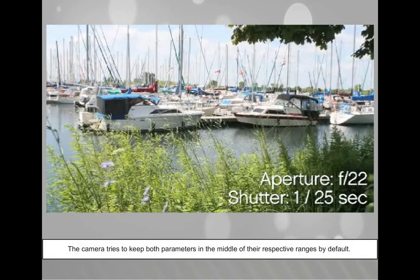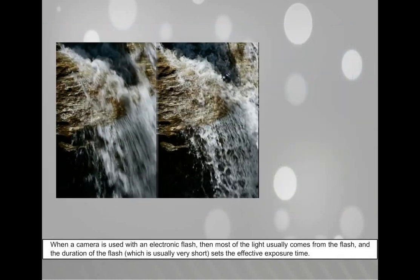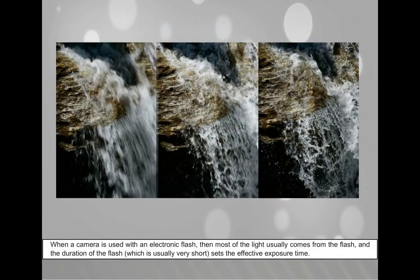The camera tries to keep both parameters in the middle of their respective ranges by default. When a camera is used with an electronic flash, most of the light usually comes from the flash and the duration of the flash — which is usually very short — sets the effective exposure time.